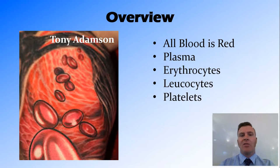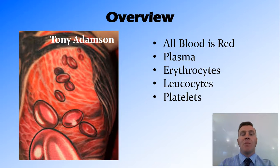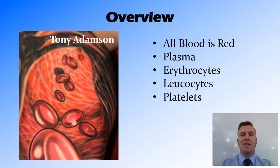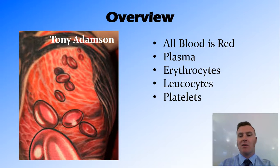In this video we have looked at the components of blood. We talked about all blood being red — oxygenated blood being bright red and deoxygenated blood being dull red. Plasma is a straw-coloured liquid that carries the other components around. Erythrocytes are the red blood cells containing hemoglobin to carry oxygen. Leukocytes are the white blood cells that attack invading molecules and prevent disease. And platelets are very important for blood clotting so that you don't bleed out when you scrape your knee. Thanks for watching, guys.